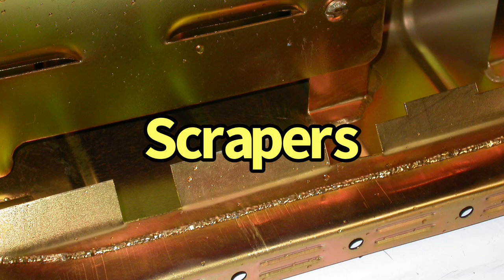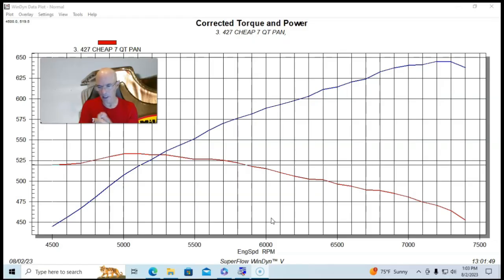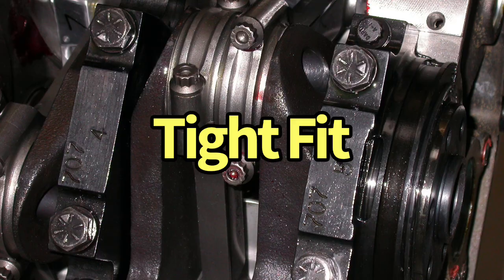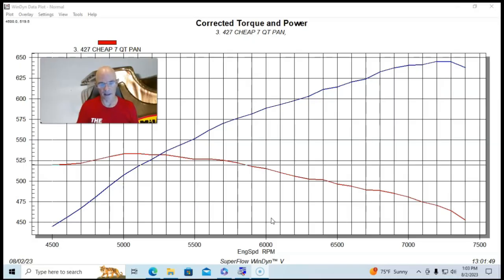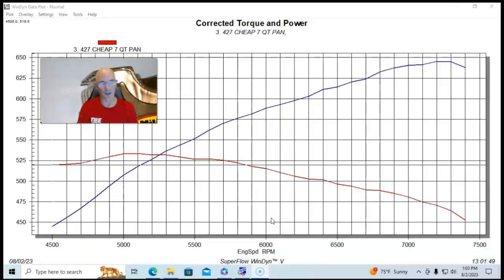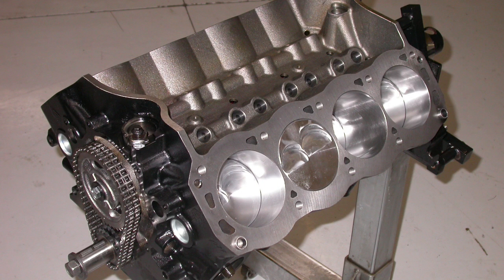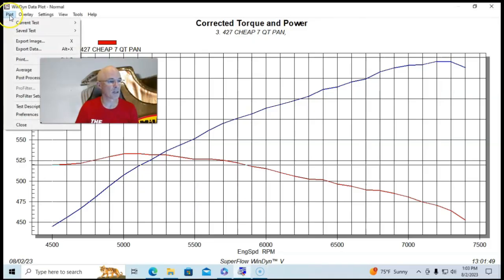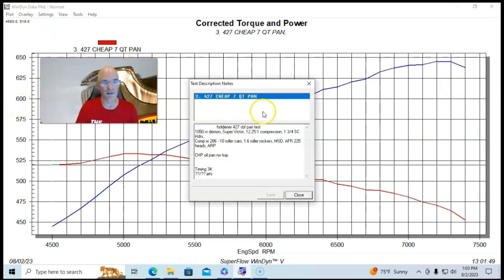Obviously we had a dedicated pickup for that combination. And this was, we had to do a little bit of clearancing and things to make this work on our Dart block. The pan, I don't think was exactly designed for the four bolt caps that we had on this motor, but this was 427 inches. So it was a 4.125 bore and a four inch stroke.